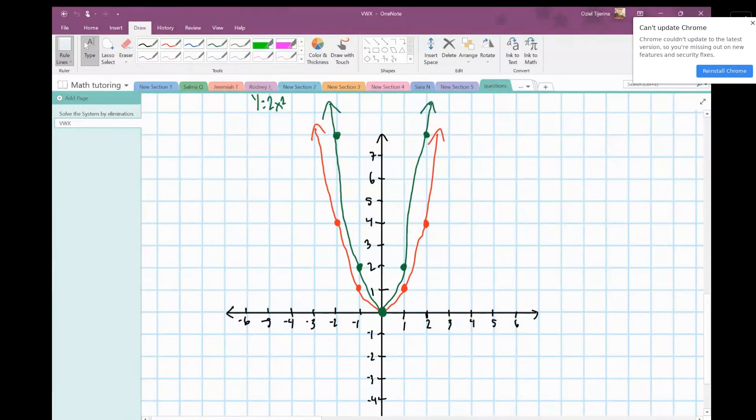Okay, so here's the thing about this question. It's asking you to find the area between these two curves. Obviously, this is x squared and then y equals 2x squared.